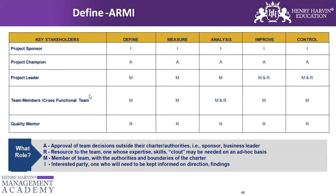Now I want to explain how the project sponsor, project champion, project leader, team members, and quality fit under ARMI. The project sponsor is the head of the department, function, or business unit. They are the one getting impacted and that's why they want this project done — they sit at the top. The project champion is one level below the sponsor, responsible for giving directions, removing roadblocks, and giving certain approvals.